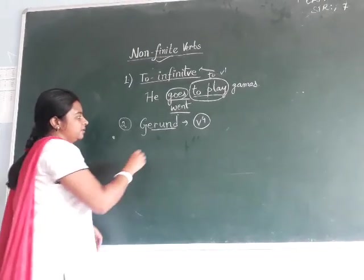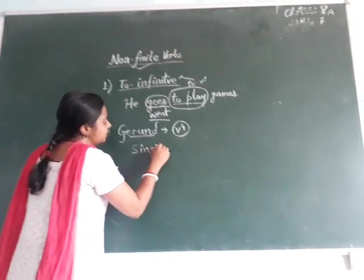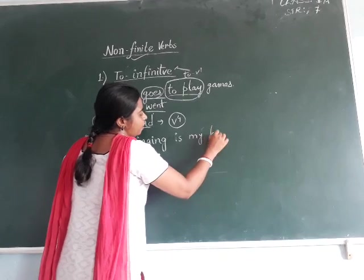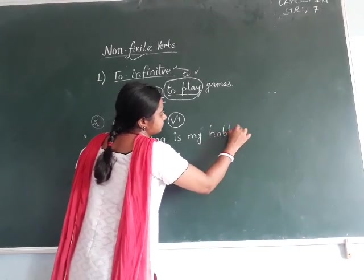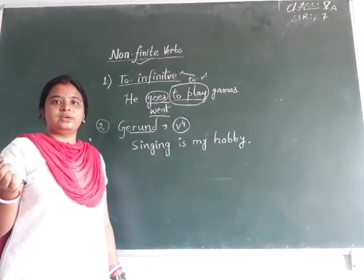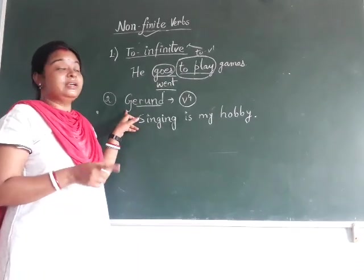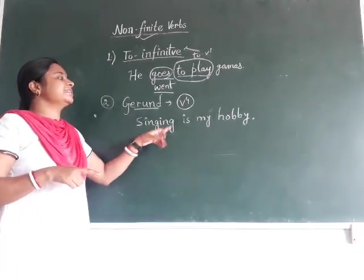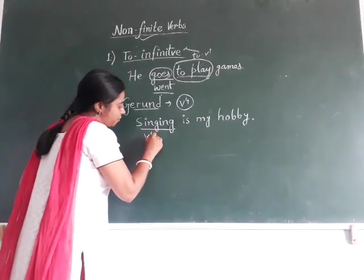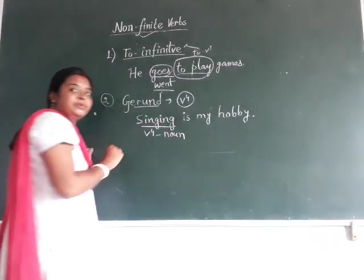For example, 'Singing is my hobby.' If I say 'I am singing a song,' in that case 'singing' becomes a verb — that won't be gerund at all. But in 'Singing is my hobby,' singing is used as a noun in a sentence. Whenever the V4 form is used as a noun, that becomes gerund.